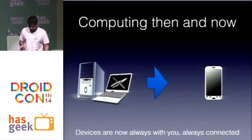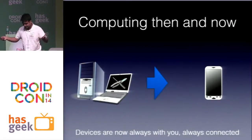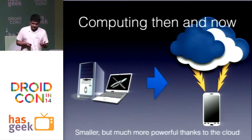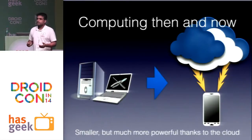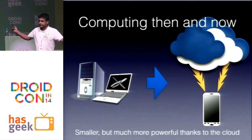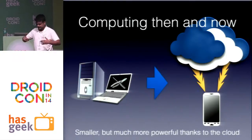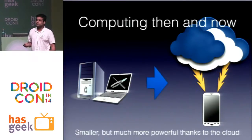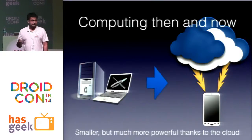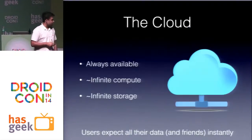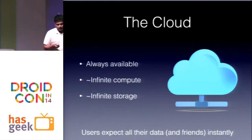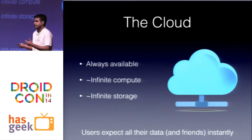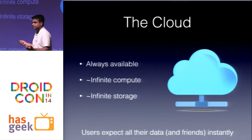Devices are getting smaller and cheaper, but that doesn't mean what you can do is getting less sophisticated. You have this entire infrastructure powered by the internet, and on a mobile phone you can build much more powerful software than you could ten years ago or even five years ago. A connected app means the network is always available, giving the user the perception of infinite compute and infinite storage.